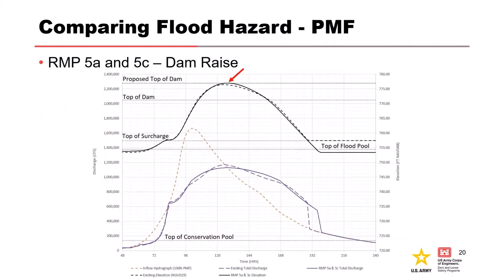For RMP 5A and 5C, where the modification is a dam raise, with a higher dam crest elevation and no additional release capacity, the peak PMF elevation would be expected to go up slightly from existing conditions — and that's what we see, a slight increase in PMF elevation over the original. The outflow is stretched out a little more versus the original outflow. You don't have quite as much overtopping peak anymore, so it's all just going through the spillway — a little more attenuated on the outflow. That's what you expect with a dam raise.